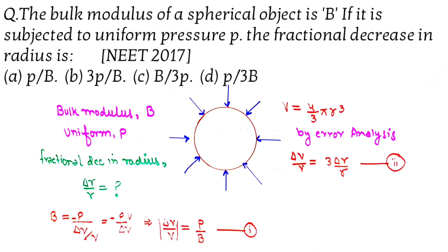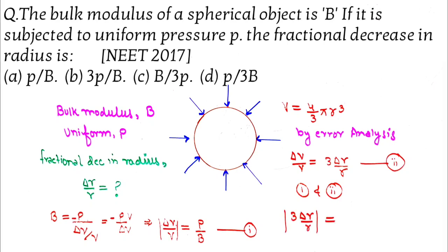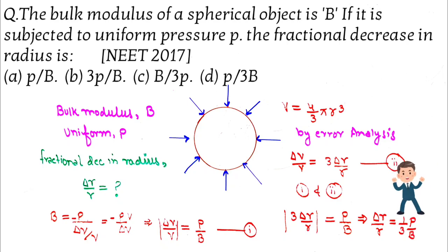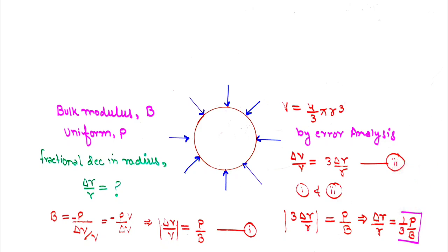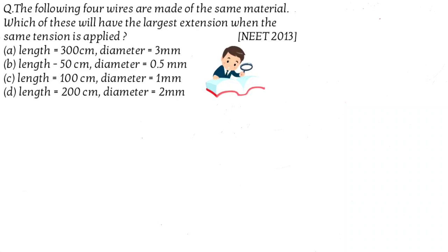Solving from equations 1 and 2, you get 3 delta r by r is equal to P by B, or delta r by r is equal to 1 by 3 times P by B, and that is the answer. In the next question, four wires are made of the same material.